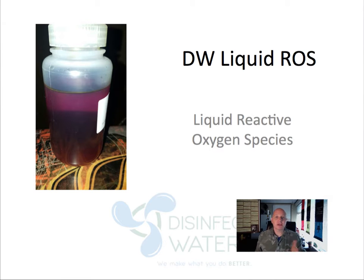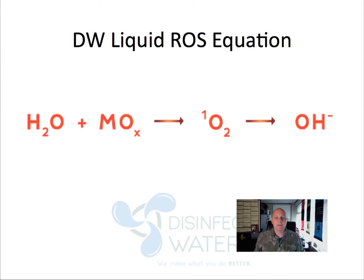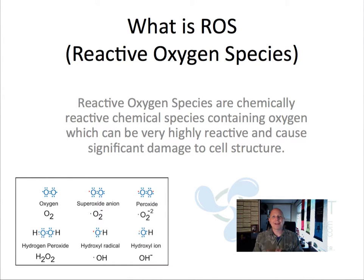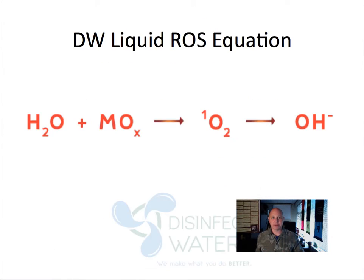DW Liquid ROS is a liquid reactive species. What does that mean? It's basically a chemically reactive species containing oxygen. It's going to be highly reactive and it's going to cause damage to cell walls and cell structure — in a good way. There's a lot of things in water that you do not want, like algae. This will break that algae up at the molecular cellular level.